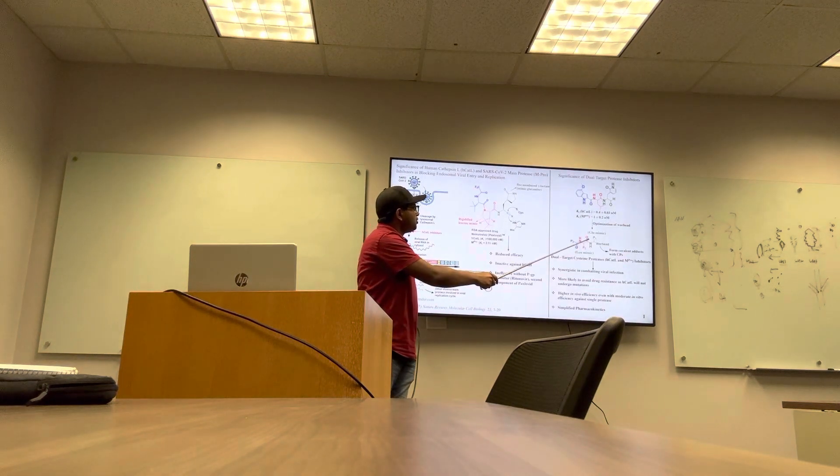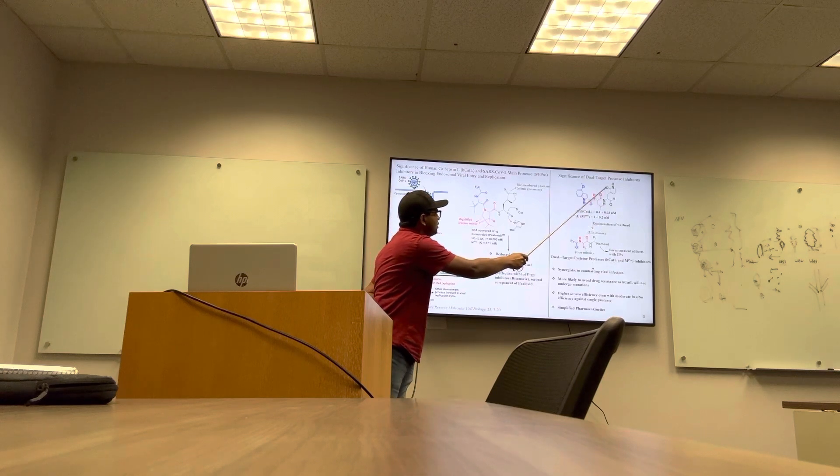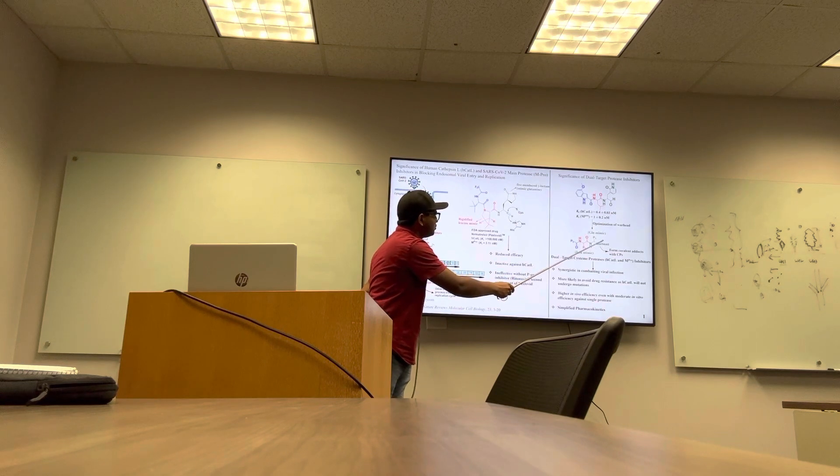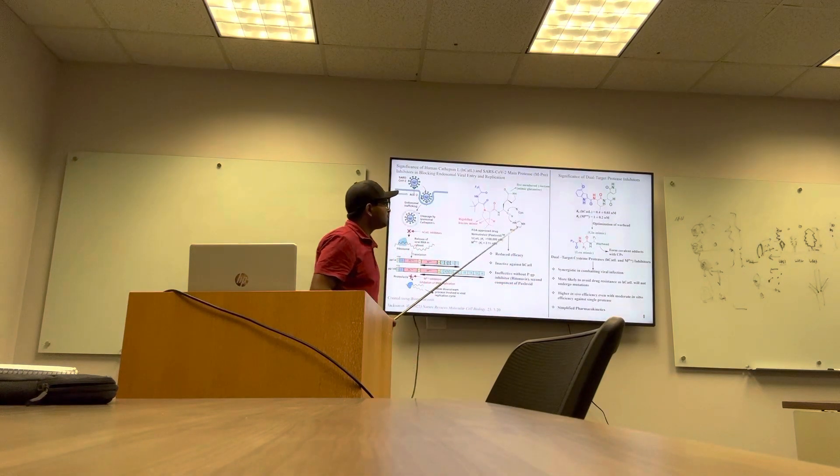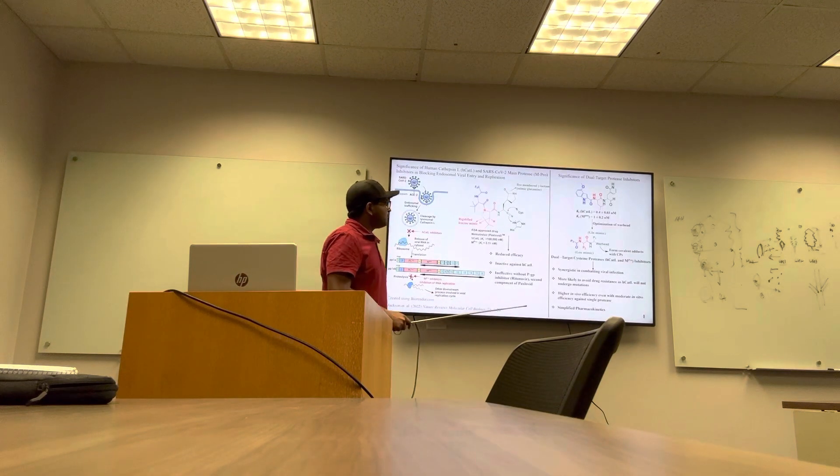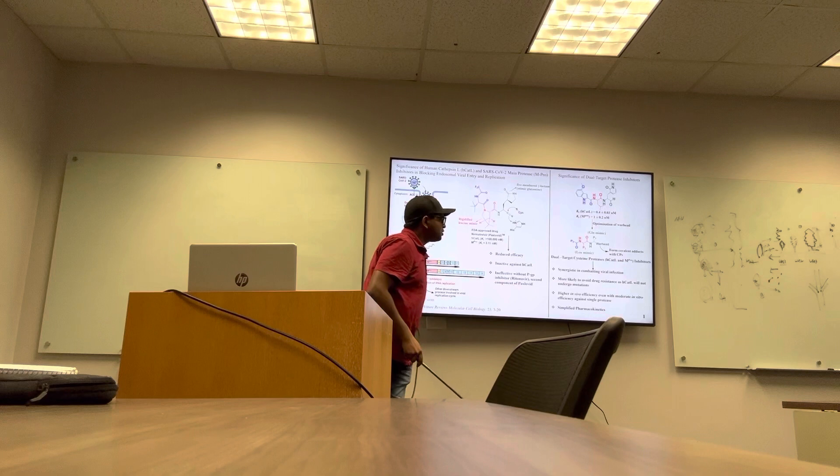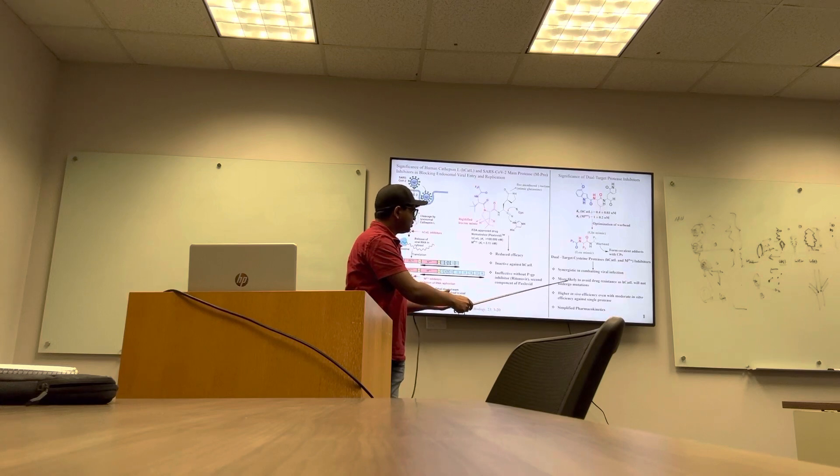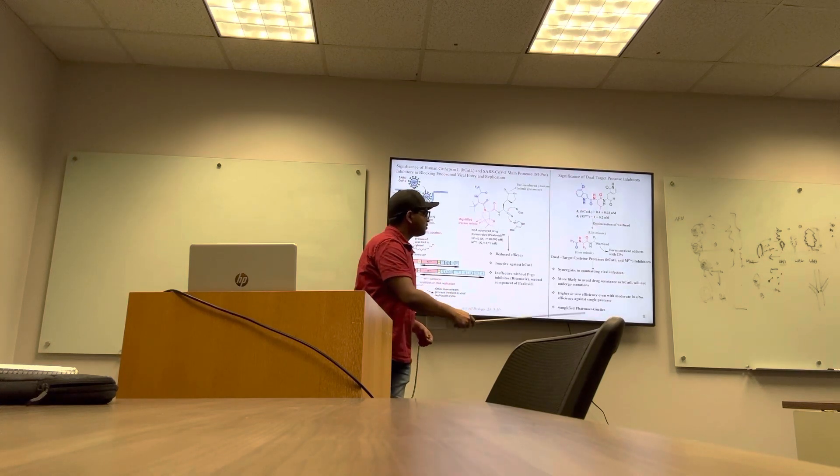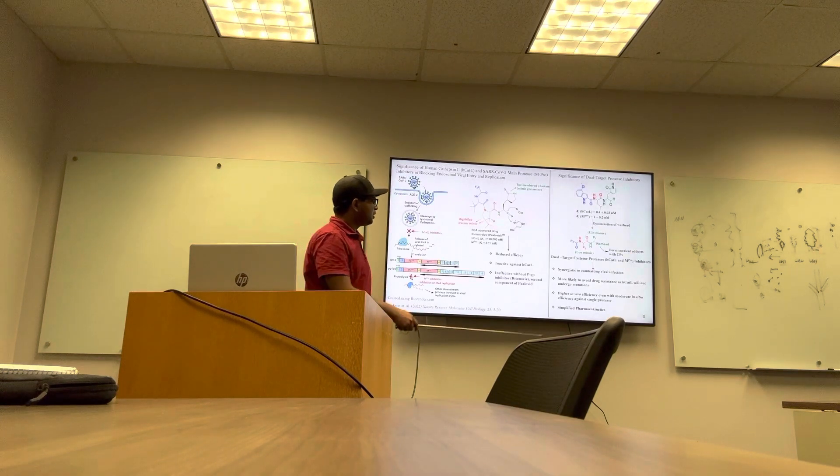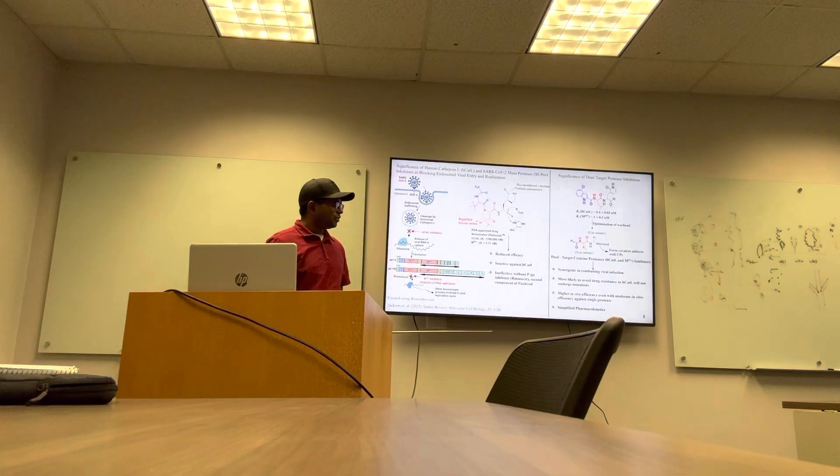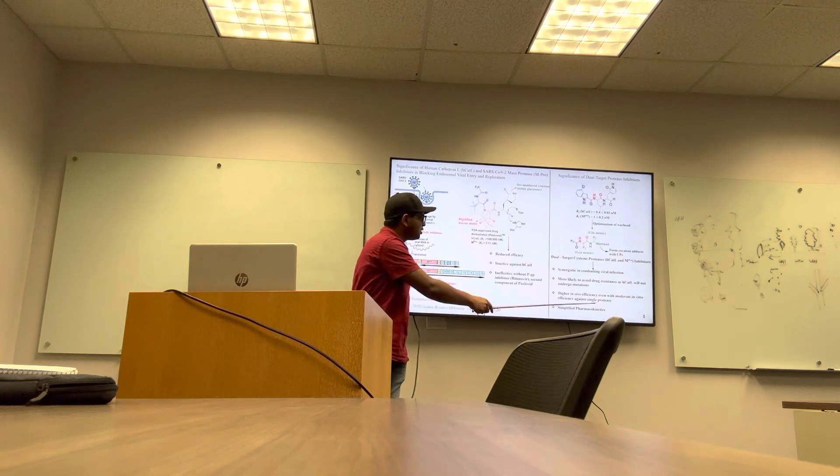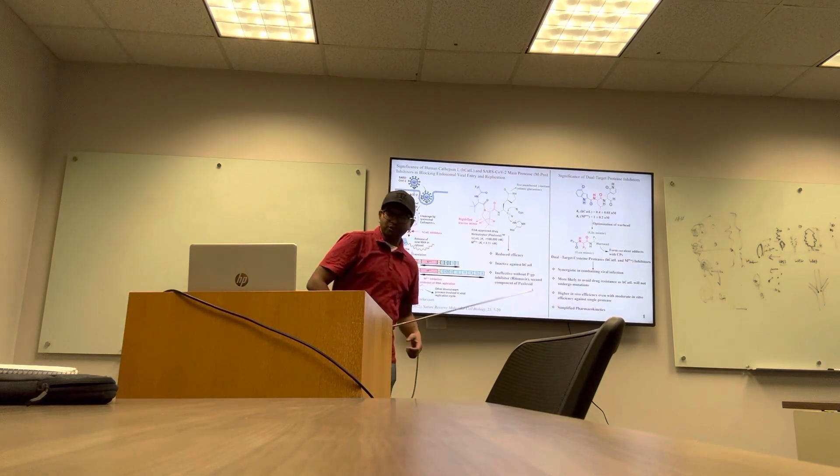Our overall aim in this proposal is to use leucine-glutamine peptidomimetics and attach mild electrophilic covalent warheads. There are several advantages of targeting both cysteine proteases using single inhibitors. They will produce synergy and are most likely to avoid drug resistance as host protease H-cathepsin will not undergo mutations. Recent literature suggests these dual inhibitors will have higher in vivo efficiency even though they show moderate potency against single protease, and they will have simplified pharmacokinetics.